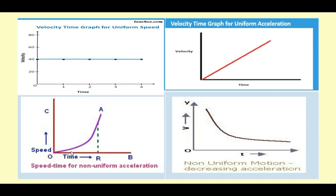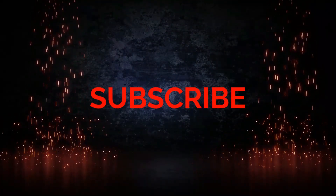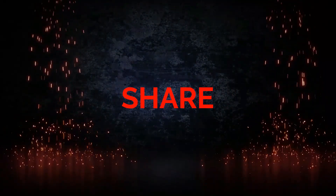A velocity-time graph for non-uniform acceleration shows a curved line where velocity changes but not at a uniform rate. There is also non-uniform retardation, where velocity is decreasing — this is called retardation. By looking at the velocity-time graph, we can conclude whether the motion is uniform, uniformly accelerated, or non-uniformly accelerated.